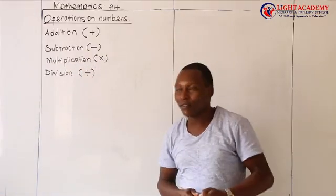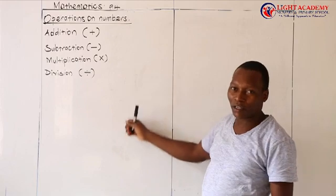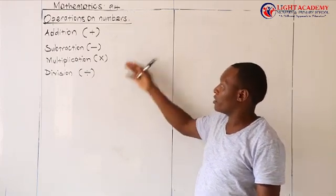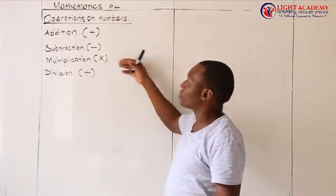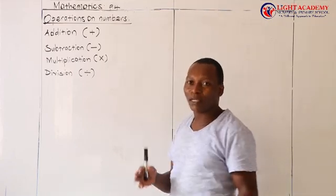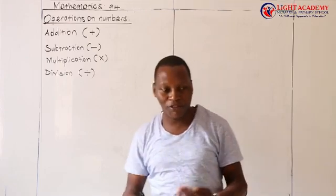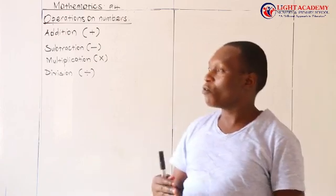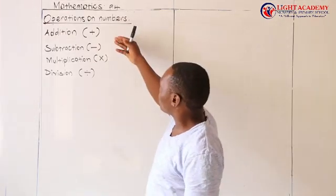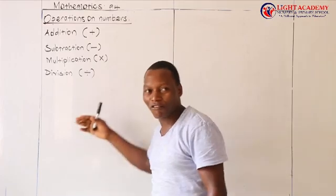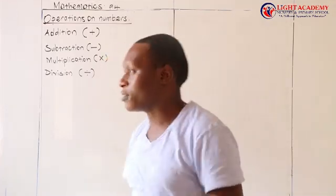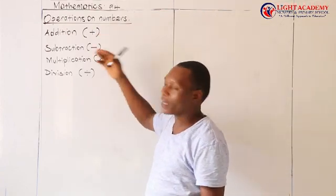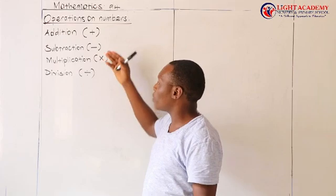Dear boys and girls, you've already seen these operations right from primary 1, primary 2, primary 3, and in primary 4 we are going to see the same. However, we shall see some changes — just as when you leave one class and go to another, much as the topic is the same, the content might need to change. These are the four basic operations we use in mathematics: we can either add numbers, subtract them, multiply them, or divide them.